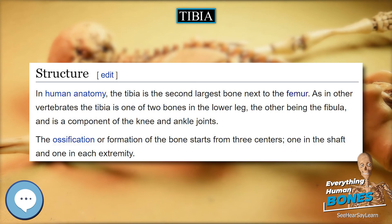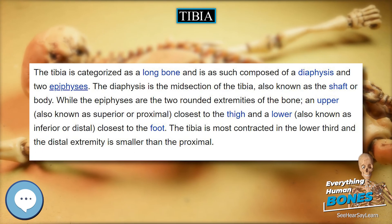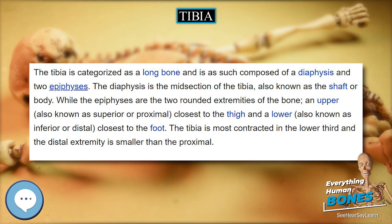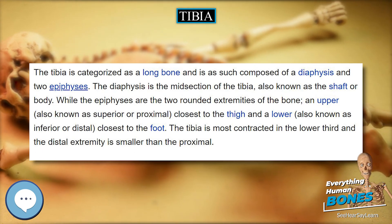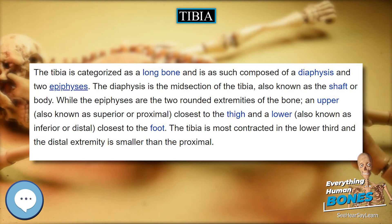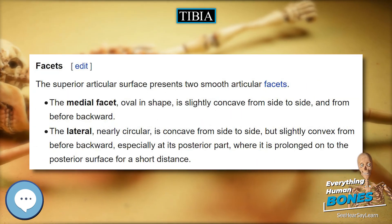Two additional centers occasionally exist: one for the tongue-shaped process of the upper epiphysis, which forms the tuberosity, and one for the medial malleolus.